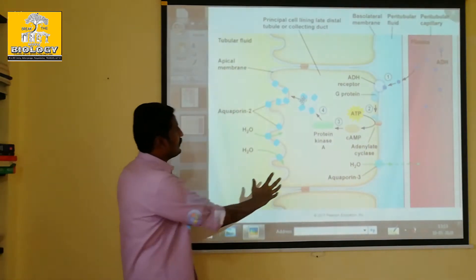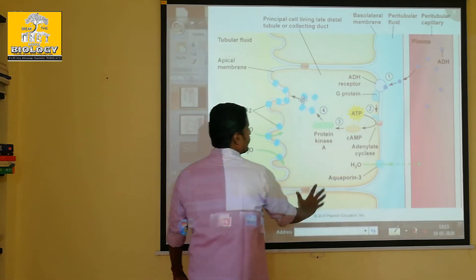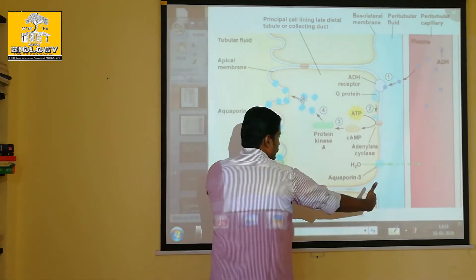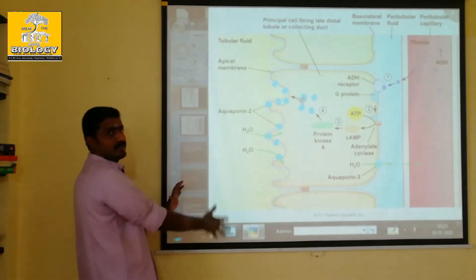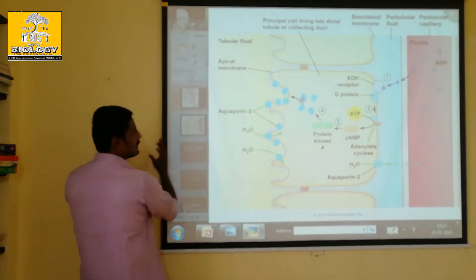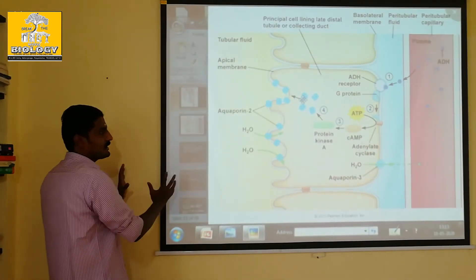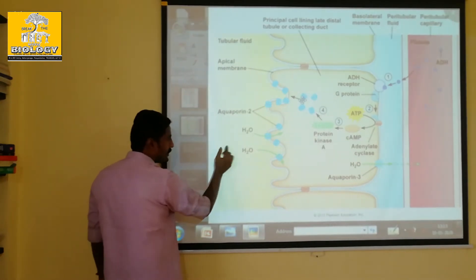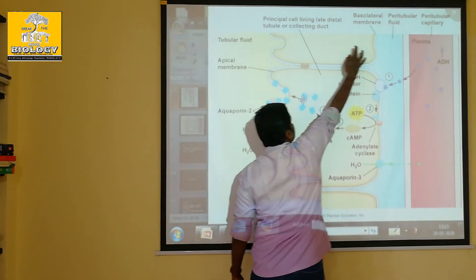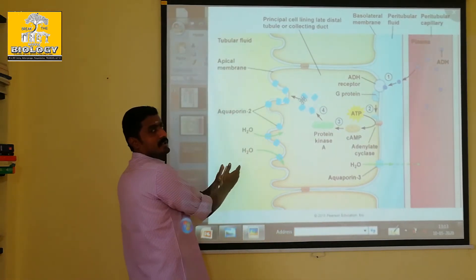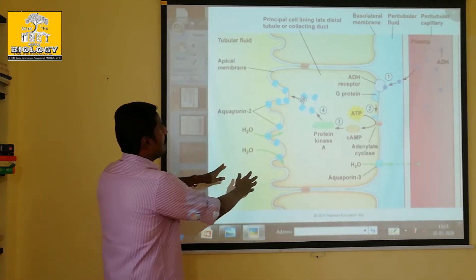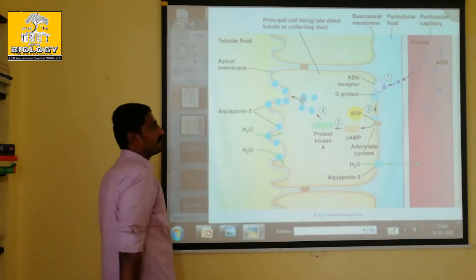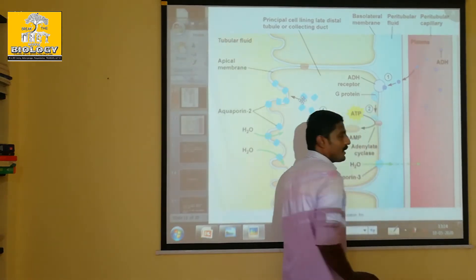This is the DCT or collecting duct. On one side there is the renal filtrate, and on the other side there is a blood vessel. This is the renal filtrate, and this is the blood vessel — one on each side of the kidney tubule.